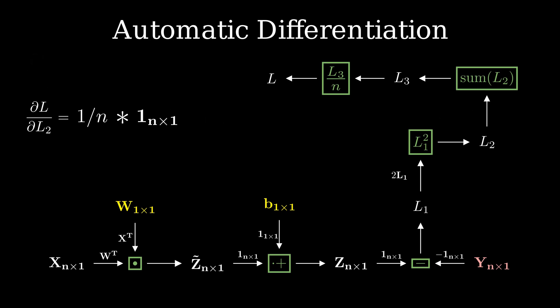Plugging these values in, we get our answer. The star symbol here denotes element wise product where 1 upon n is added to each element of the unit vector. We do the same thing to get global derivative of l with respect to l1 and then l with respect to z.